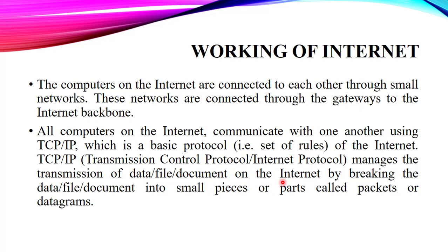Now let's discuss how this internet actually works. The internet is a combination of multiple networks — many small networks connected together — and all these networks are the backbone of the internet. All computers on the internet communicate with each other using TCP/IP, which is the basic protocol. TCP/IP stands for Transmission Control Protocol and Internet Protocol. TCP is responsible for data sharing and IP is responsible for locating devices. This protocol manages the transmission of data, files, or documents on the internet by breaking the files into small pieces called packets.